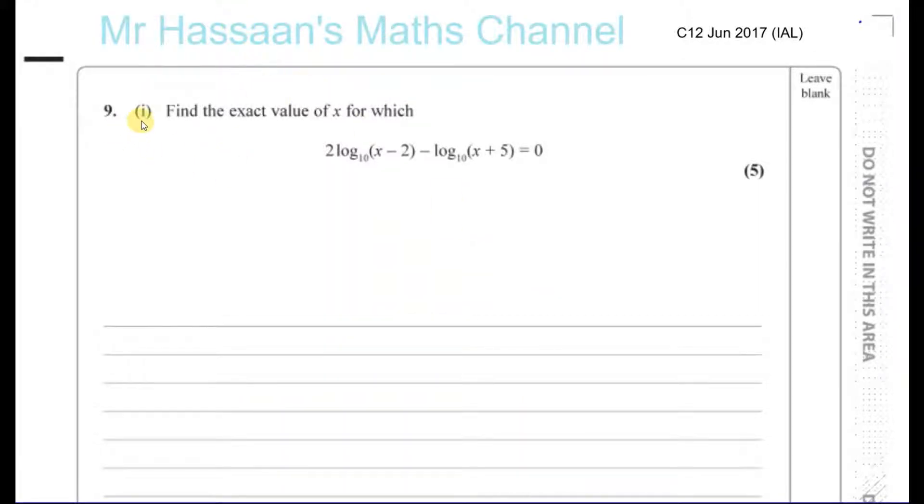Question number 9, part 1 from C12, June 2017, IAL. Find the exact value of x for which 2 times log to the base 10 of (x minus 2) minus log to the base 10 of (x plus 5) equals 0.